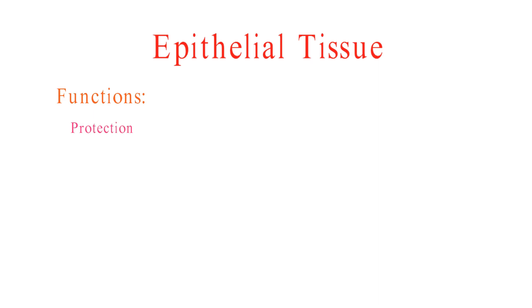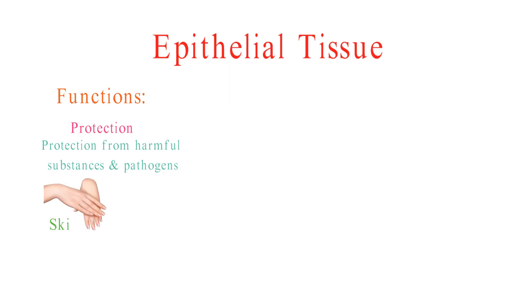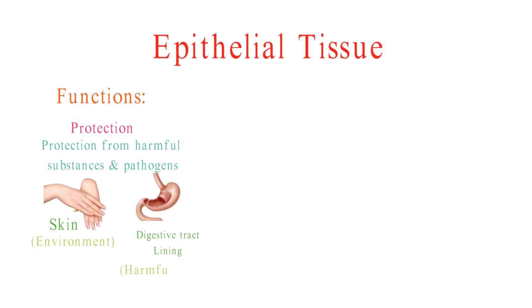Epithelial tissue helps protect the body from harmful substances and pathogens. For example, the skin protects the body from the environment, and the lining of the digestive tract protects the body from harmful bacteria.